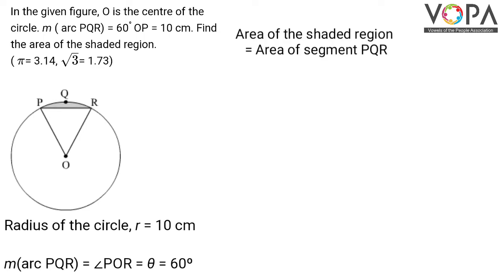The area of the shaded region equals the area of segment PQR. We use the formula: r² × (πθ/360 - sin θ/2).